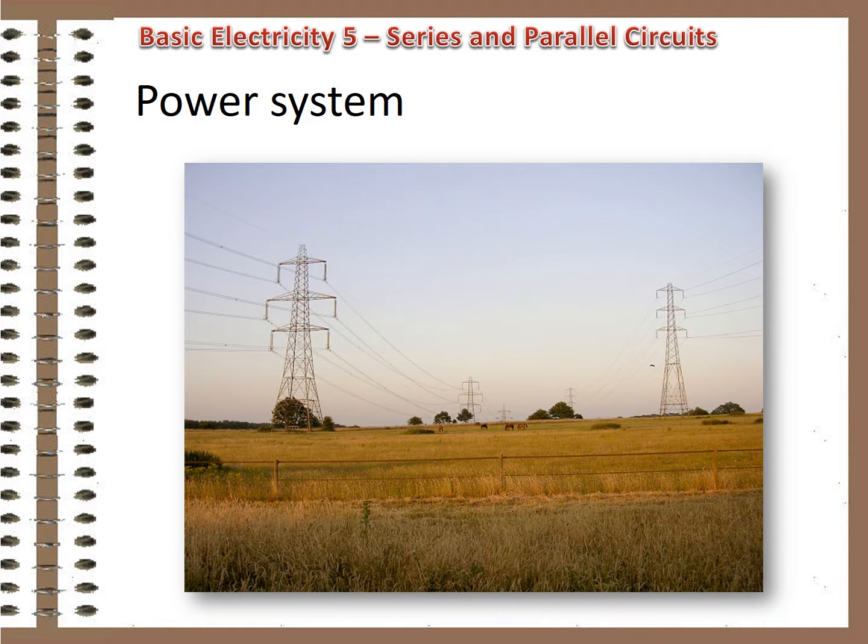The bulk power system is arranged as much as possible in a way that mimics a parallel circuit, so that a break in a line doesn't put everyone in the dark. There are still series components to the system because of economic and land use constraints, and we'll cover those later. But for the most part, the system that supplies electricity to your house behaves as a parallel circuit.